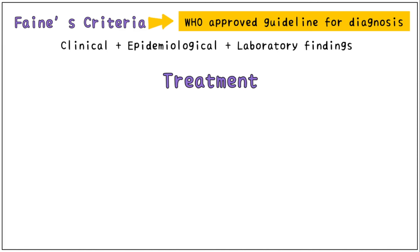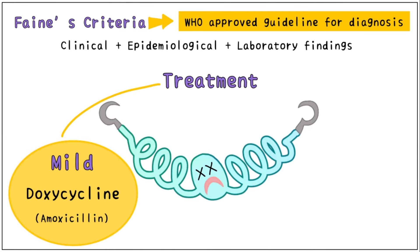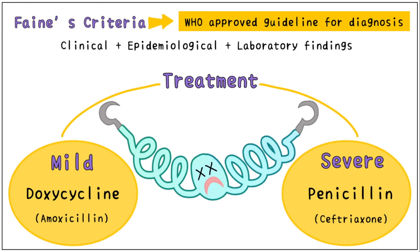For the treatment of Leptospirosis, in mild cases, oral doxycycline is the drug of choice and amoxicillin can be used as an alternative. For severe cases, penicillin is prescribed and ceftriaxone can be used as an alternative.